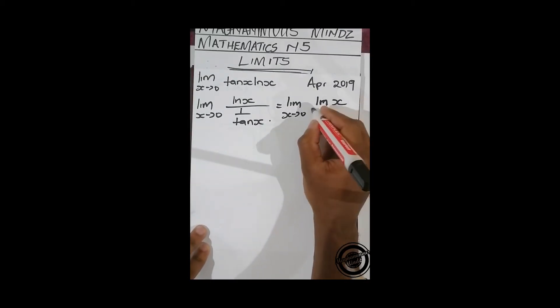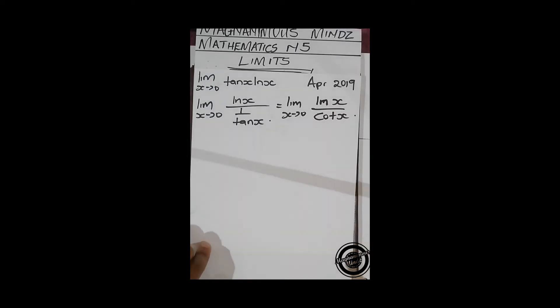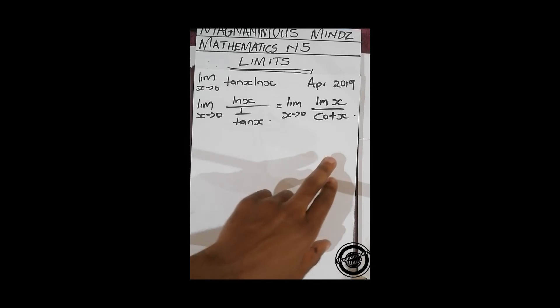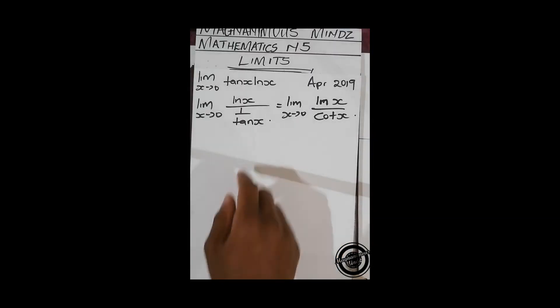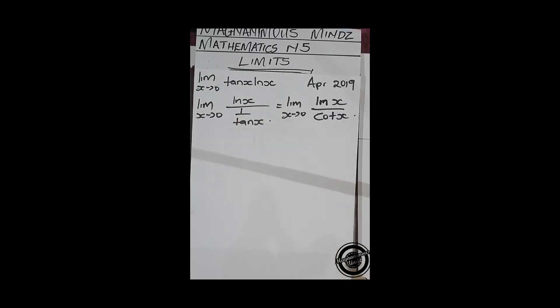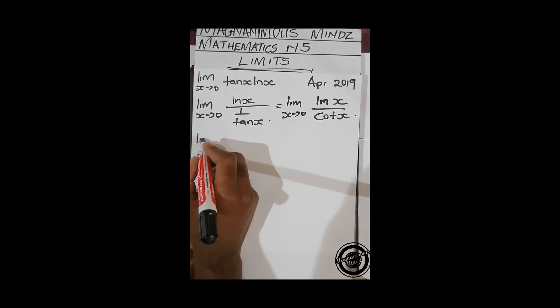ln x over cot x. And then if you plug in zero here and also here, it's going to be undefined because here you're going to have 1 divided by zero, that's undefined. Ln zero is also undefined, so we can solve that.